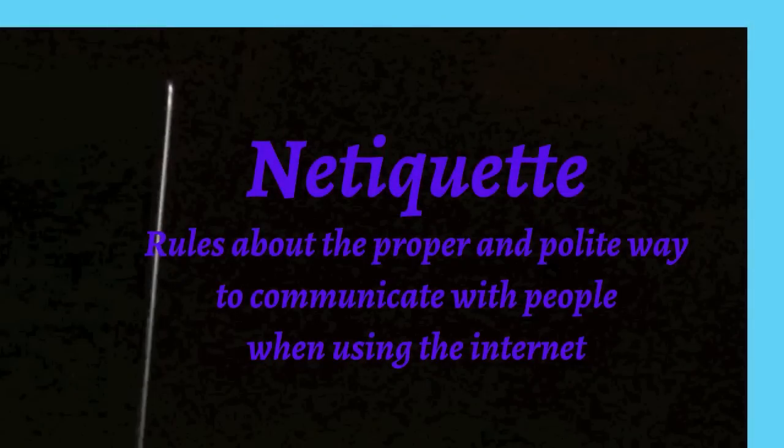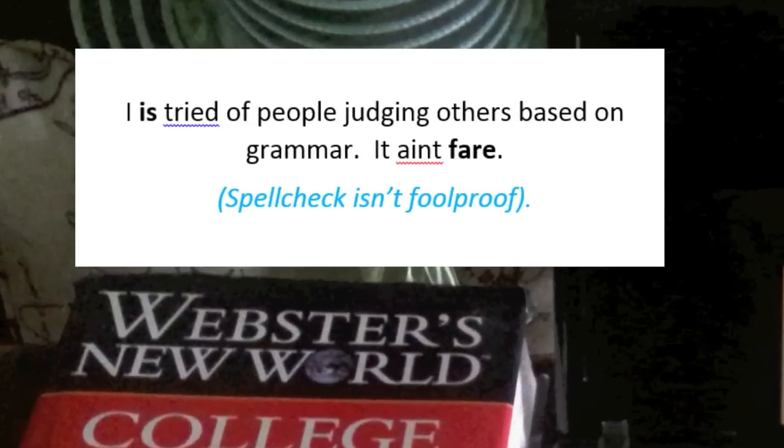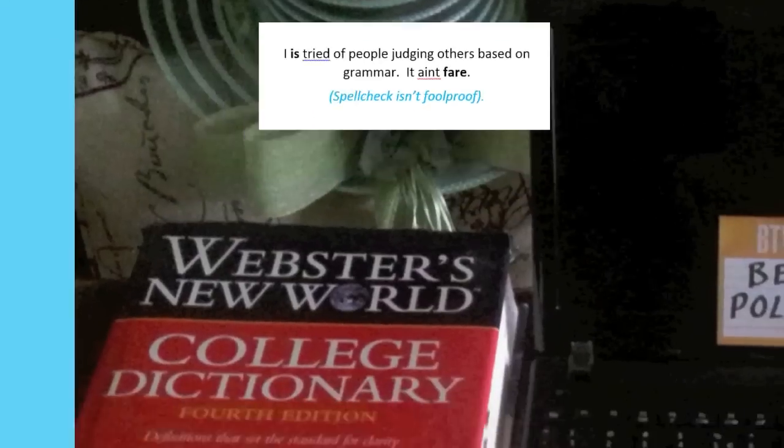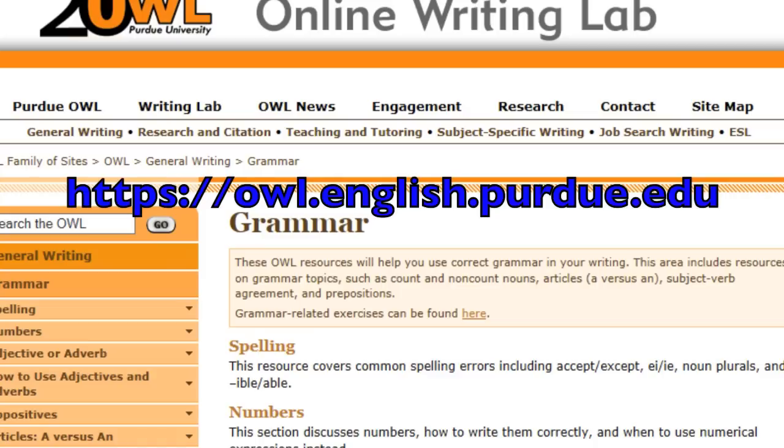Also, whether it is fair or not, people may judge others based on their grammar. Certain assumptions might be made about the person's intelligence, efforts, respect, or conscientiousness. To learn more about how to use concise language and correct grammar mistakes, check out the online writing lab at Purdue's website.